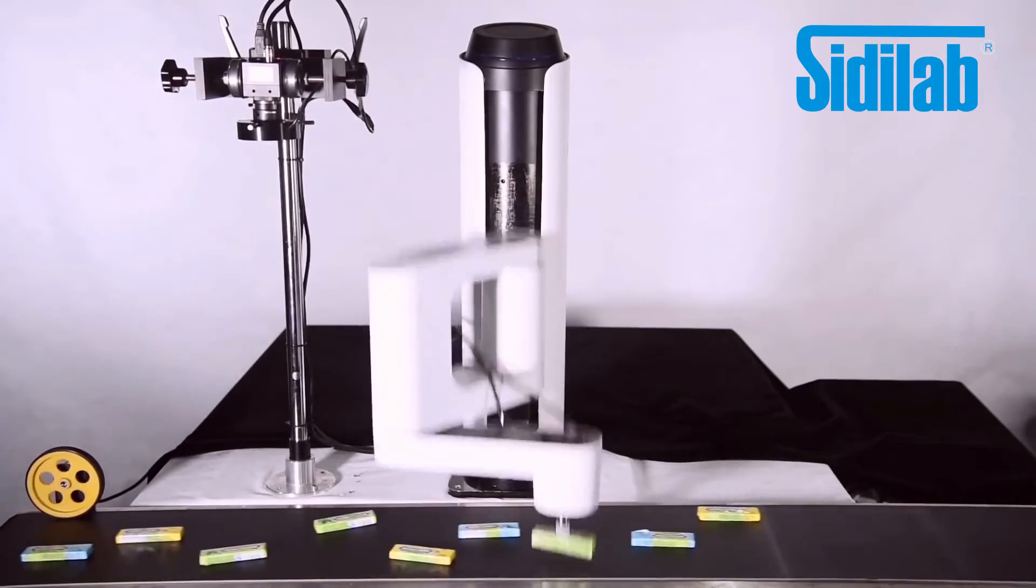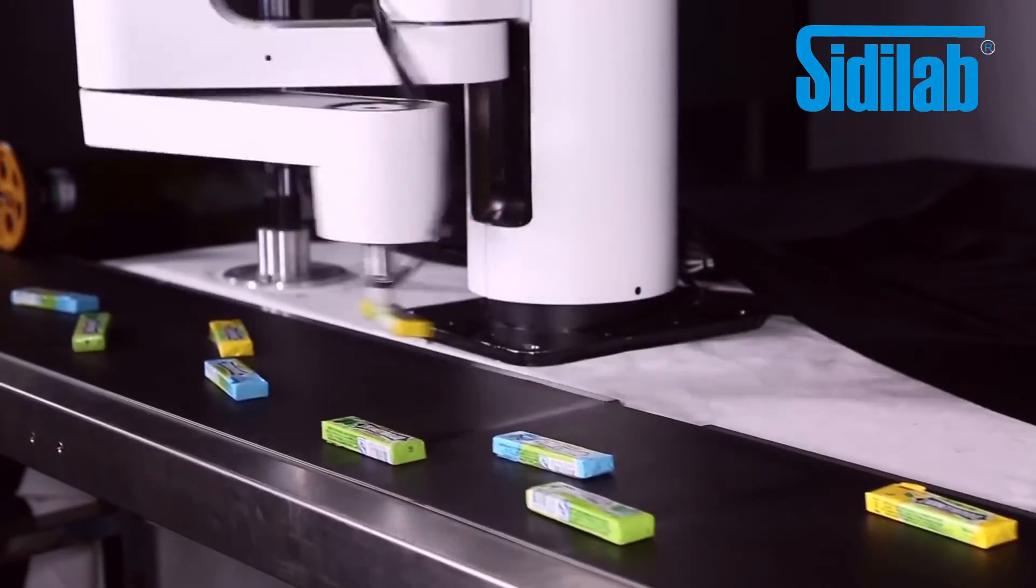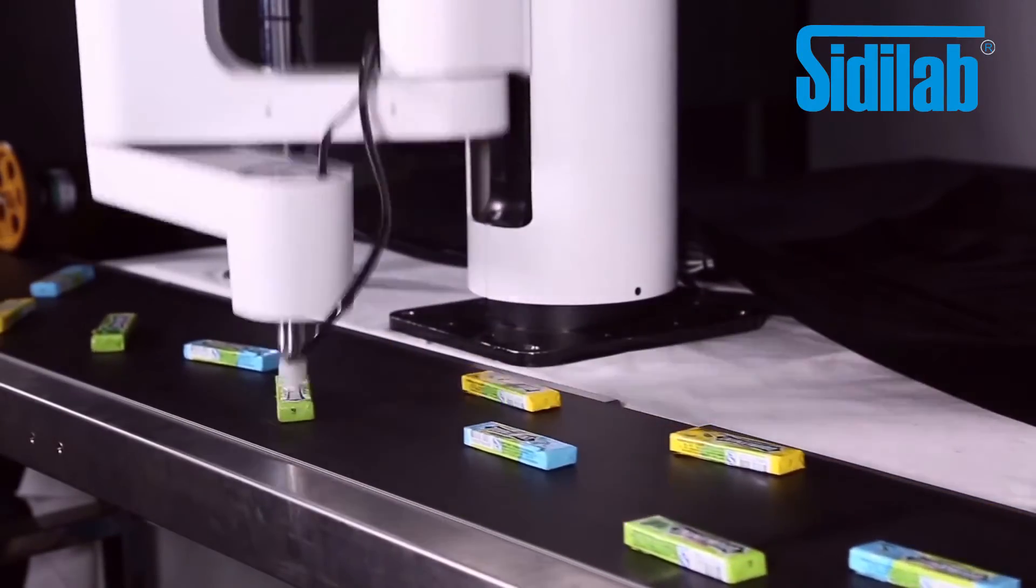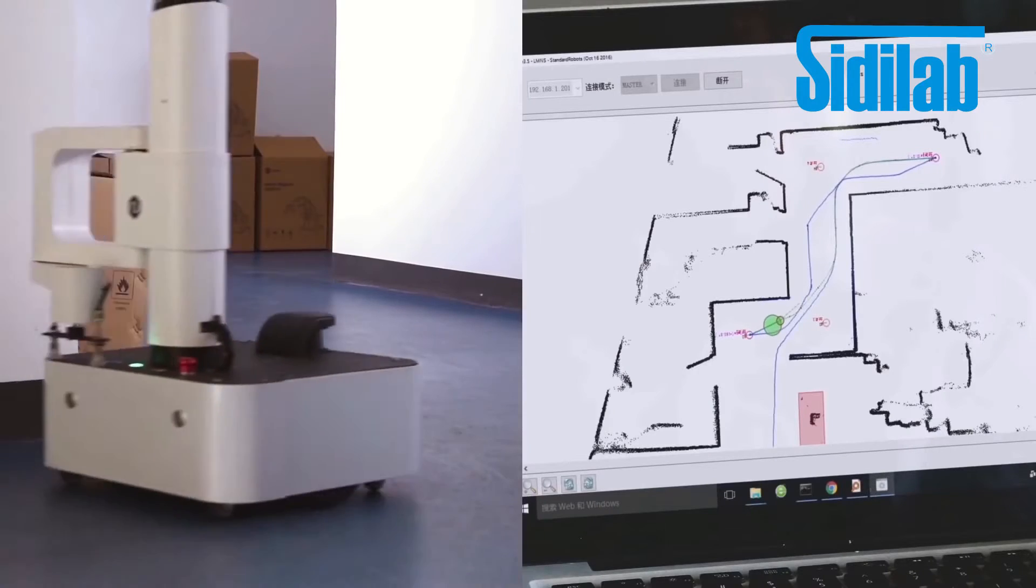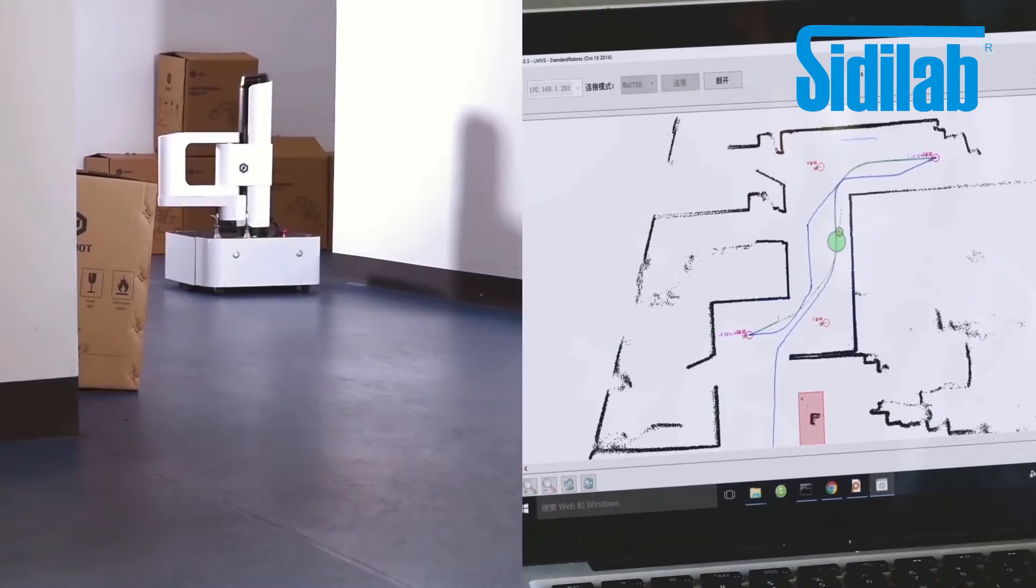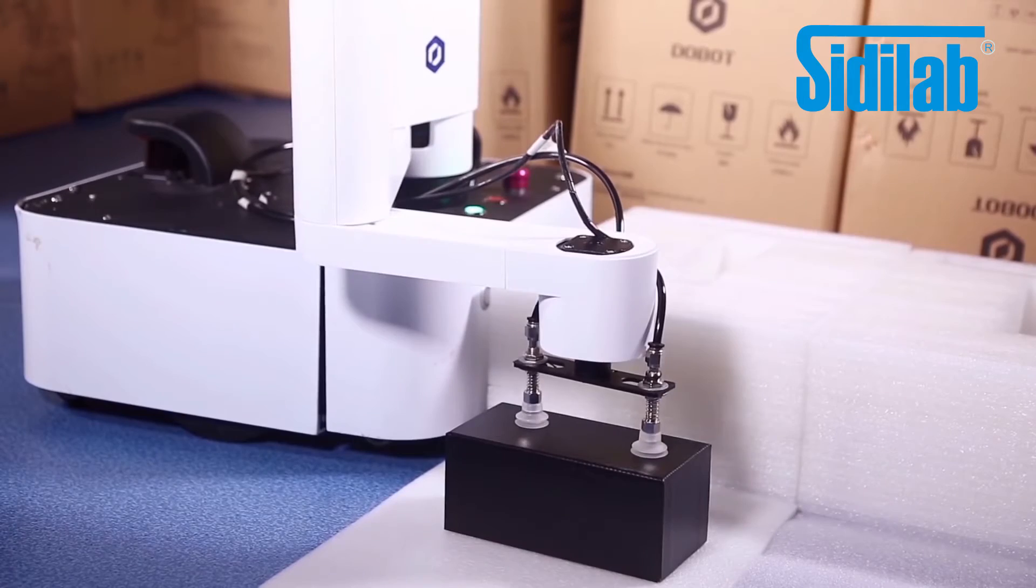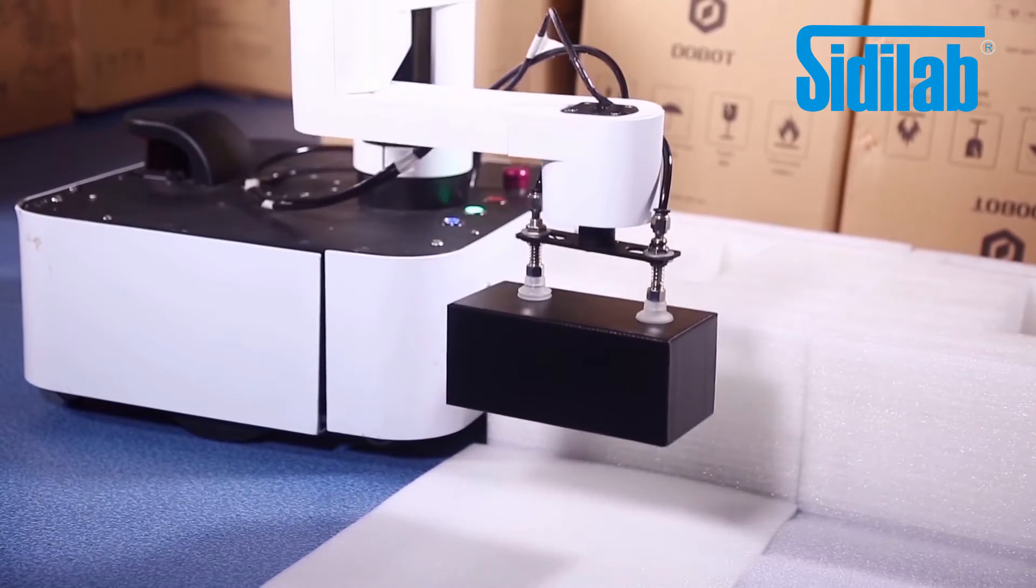Ultimately, Dubot M1 is built to replace manpower and production lines, working day and night non-stop. The built-in mapping and path planning system provides excellent mobility, providing inventory management service in your warehouse.